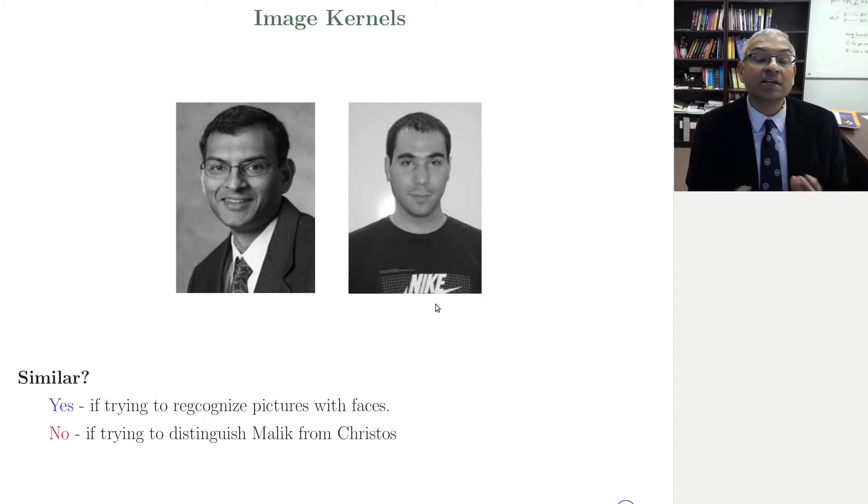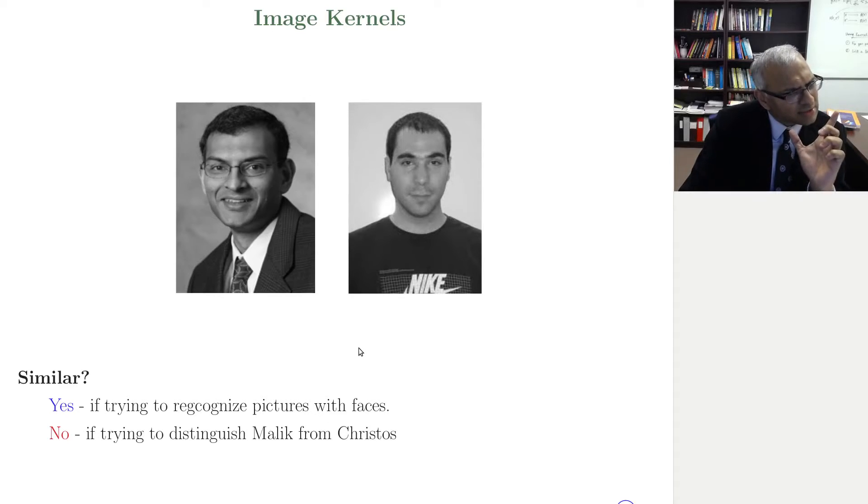Now you take these two images and the kernel is supposed to say, are the two images similar? So you build a kernel that's based on whatever features you can extract, let's say convolutional features, and then you build a kernel that outputs similarity. Now the question you have to answer is, when building this kernel, this measure of similarity, you'd have to ask yourself the question, are these two images similar? And it depends on the task. These two images are similar if you're trying to recognize pictures with faces.